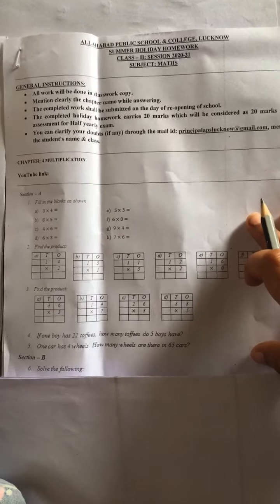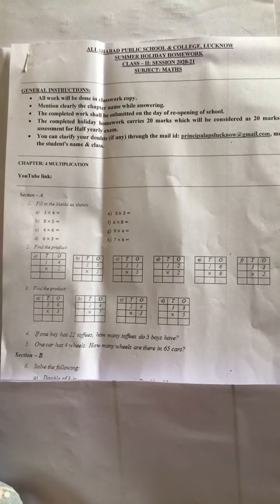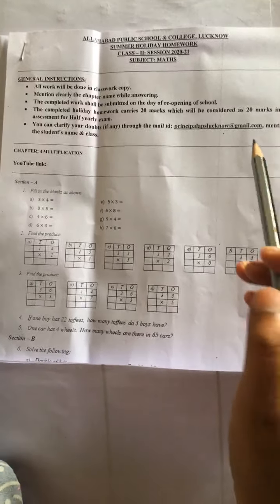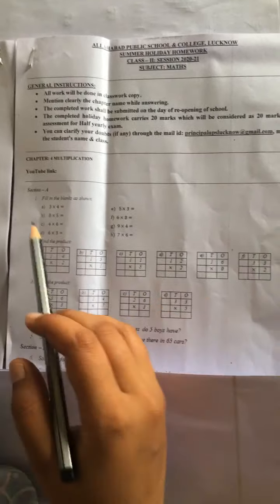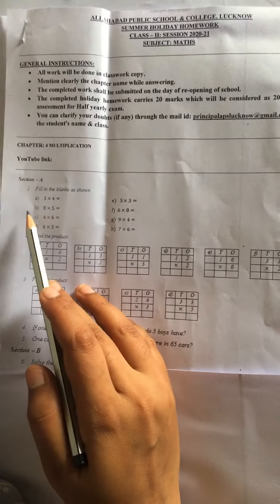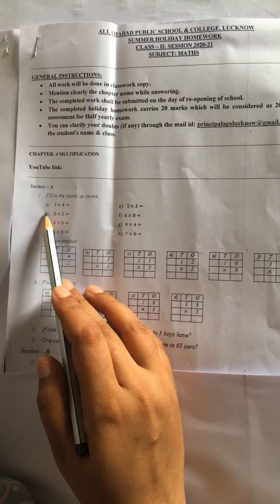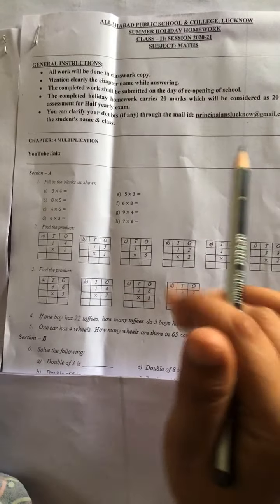Hello students, in this video we will discuss summer holiday homework of class 2. This is your chapter 4 multiplication. Question number 1, fill in the blanks as shown. The A part is 3 into 4. For this multiplication, you have to learn tables.